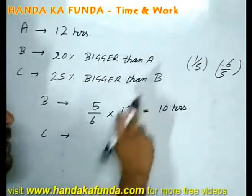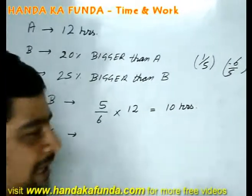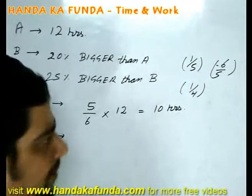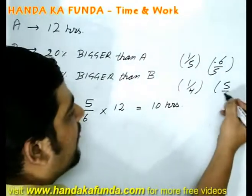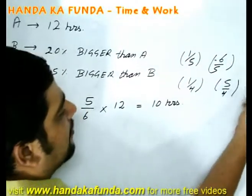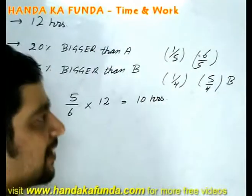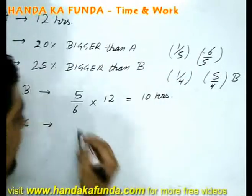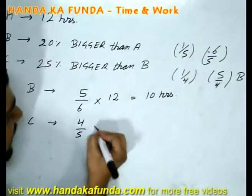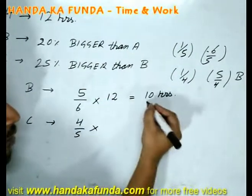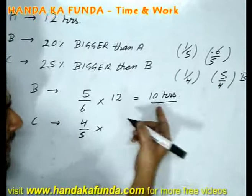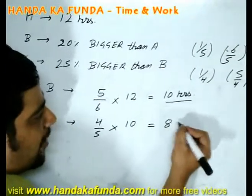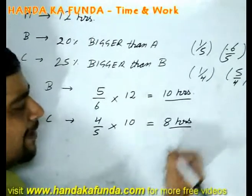C is 25% bigger than B, which means it is 1/4 bigger than B, so it is 5/4 times the size of B. Therefore, C will take 4/5 of the time that B takes. Since B takes 10 hours, C will take 4/5 of 10, which is 8 hours to fill the tank.